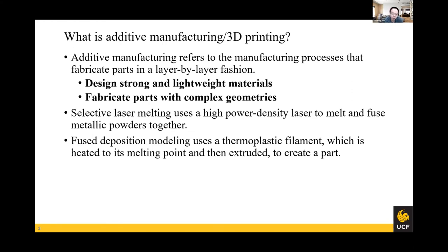In this talk, I will cover two particular 3D printing processes. One is called selective laser melting, a process that uses a high power density laser to melt and fuse metallic powders together to fabricate a part. The other is called fused deposition modeling, which fabricates parts by heating and extruding a thermoplastic filament. The first project will relate to selective laser melting, and the second and third projects will relate to fused deposition modeling.